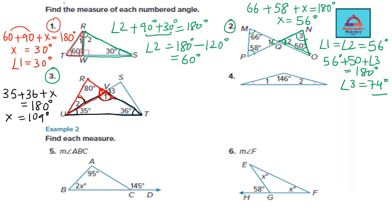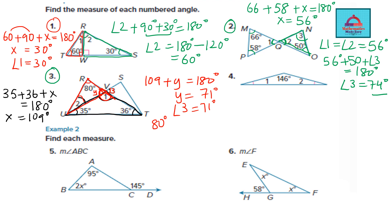So: 109 + y = 180, giving y = 71 degrees. This angle y and angle 3 are vertically opposite, so angle 3 = 71 degrees. Now for angle 2, applying the angle sum property to the second triangle: 80 + angle 2 + 71 = 180. Solving gives angle 2 = 29 degrees.